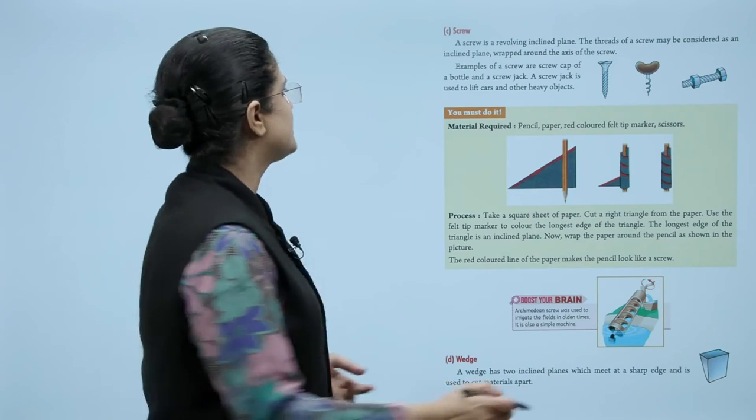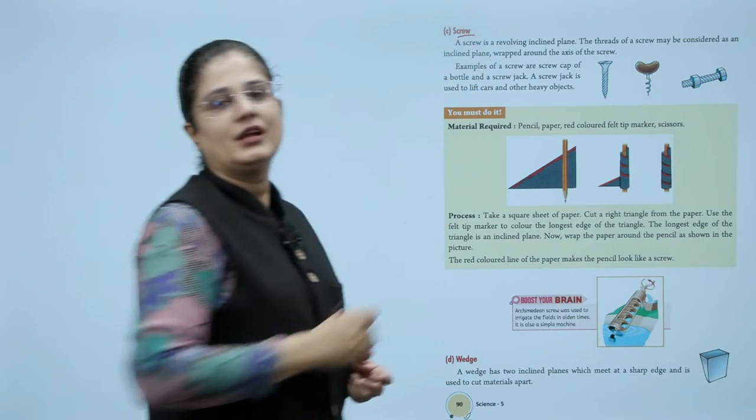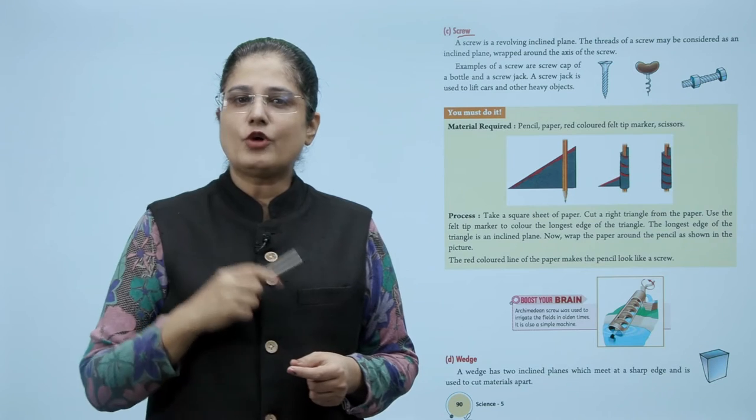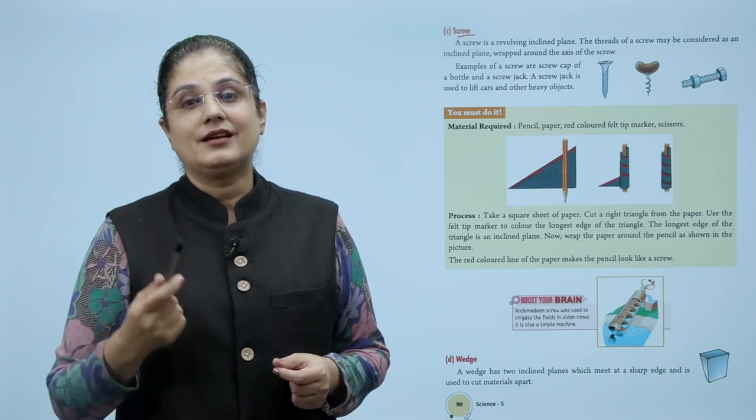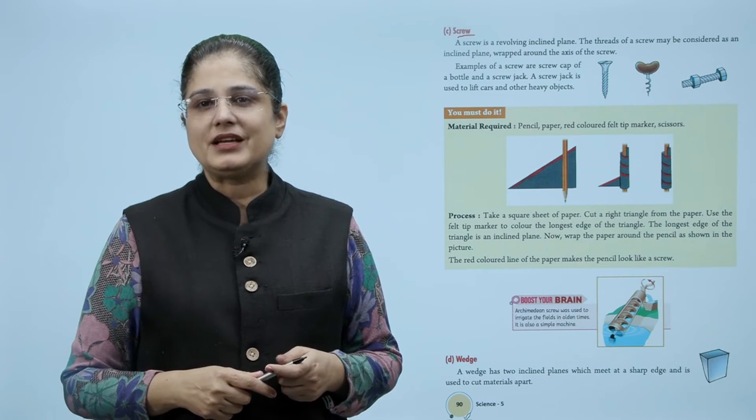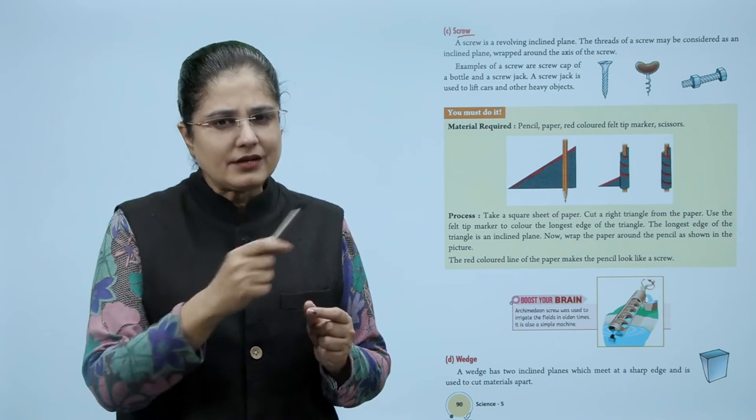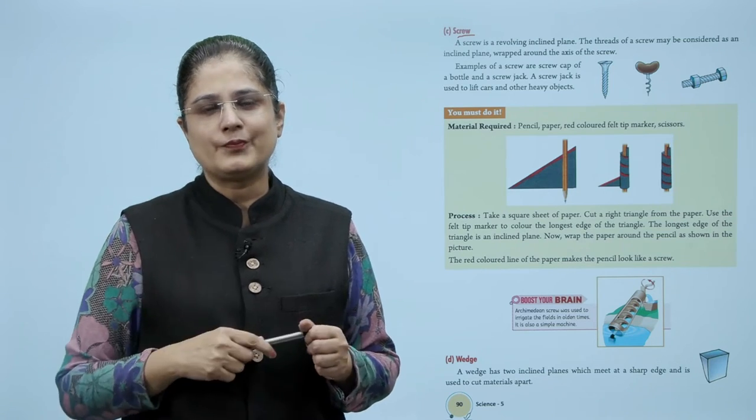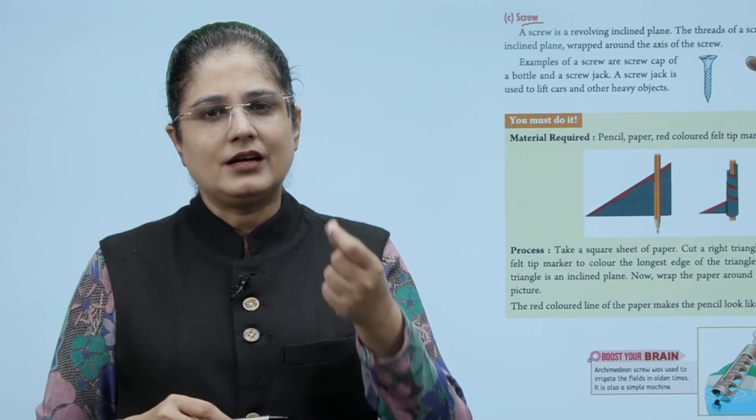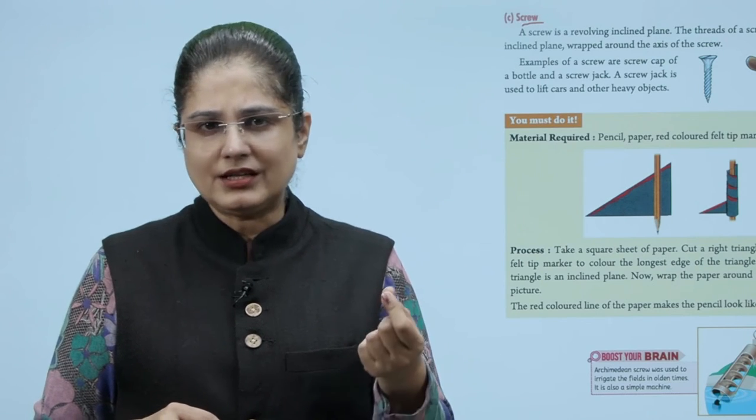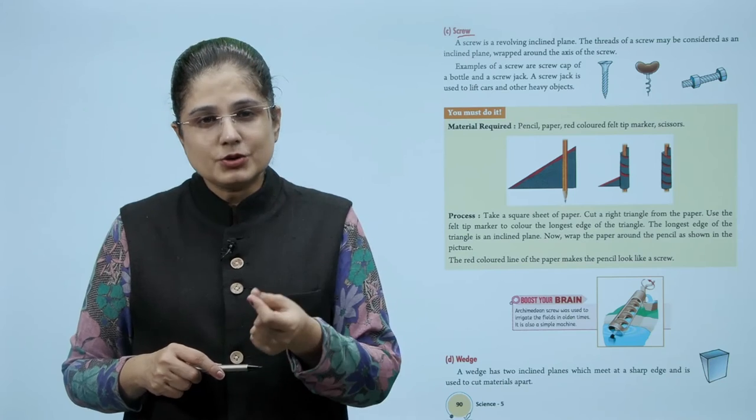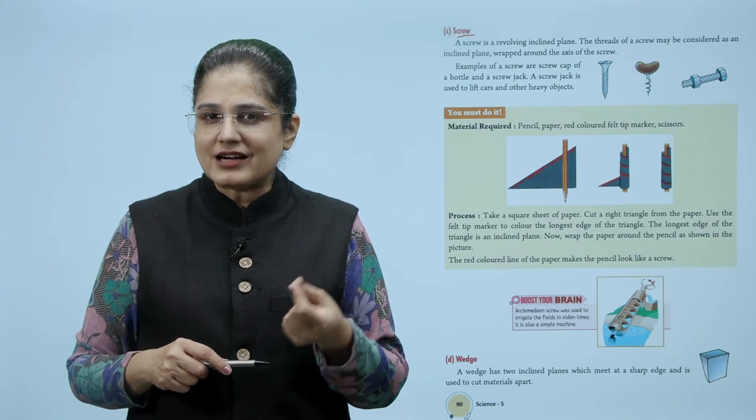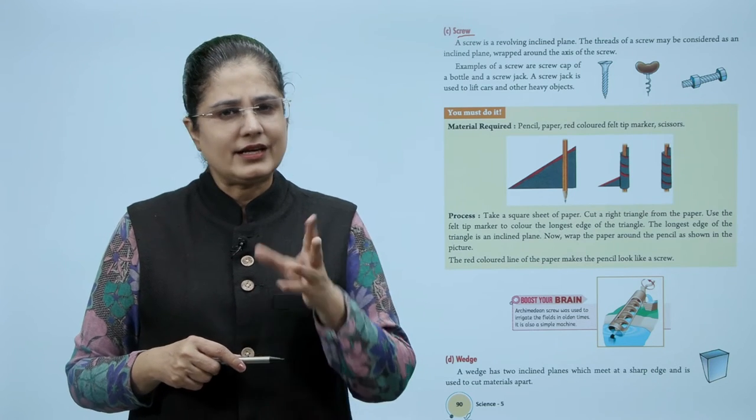Let us see what is a screw. A screw is a revolving inclined plane. The threads of a screw may be considered as an inclined plane wrapped around the axis of the screw. Examples are the screw cap of a bottle and a screw jack. A screw jack is used to lift cars and other heavy objects.